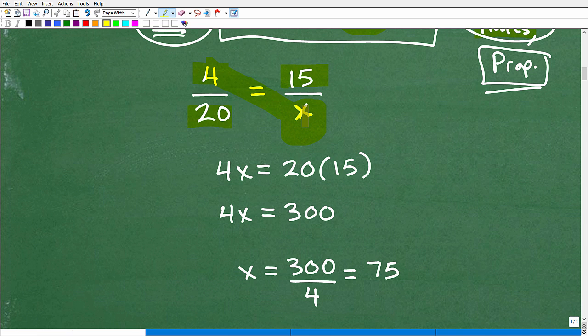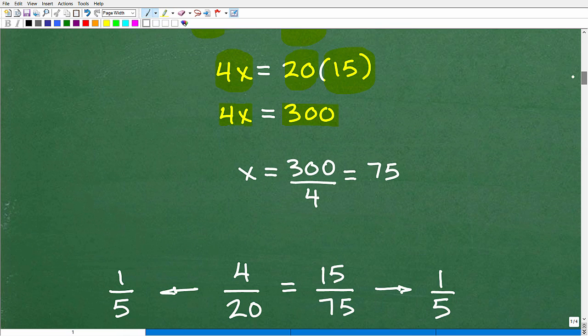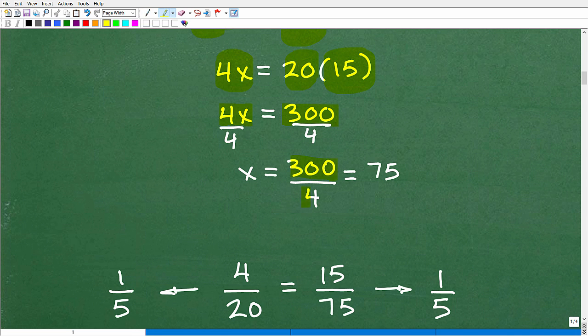What we're going to do is use what we call the cross product. So we're going to take these values and multiply crosswise. So 4 times X is 4X. 20 times 15 is 20 times 15. So this is what we call using the cross product. And this is how we solve basic proportion problems. So let's continue on. 4X is equal to 20 times 15, which means 4X is equal to 20 times 15 is 300. And to solve for X, I need to go ahead and divide both sides of the equation by 4. So I get 300 divided by 4 is 75. And that is the missing value.